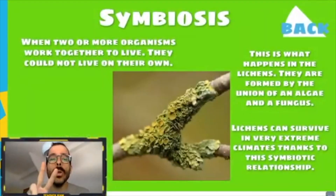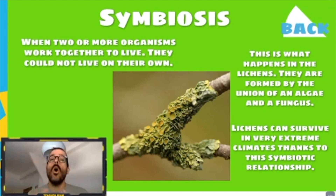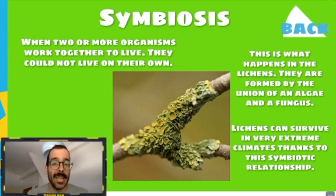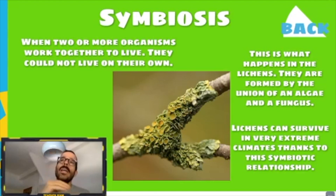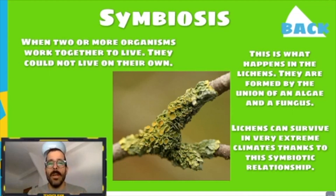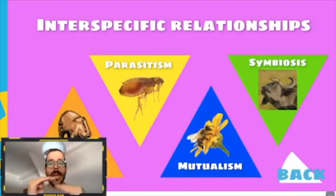Symbiosis is when two or more organisms work together to live — importantly, they could not live on their own; they need each other. This is what happens with lichen. Lichen are formed by the union of an algae and a fungus, and they survive in very extreme climates thanks to this collaboration. Each one gives something important to the relationship and they work together to survive.